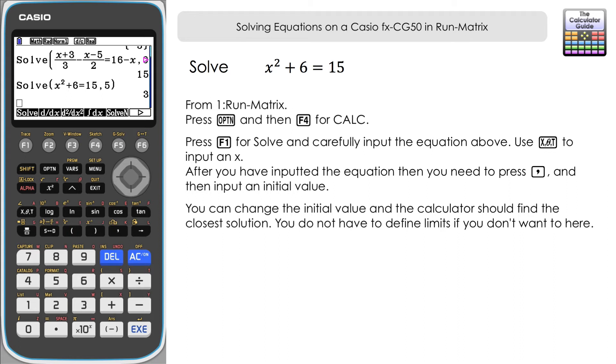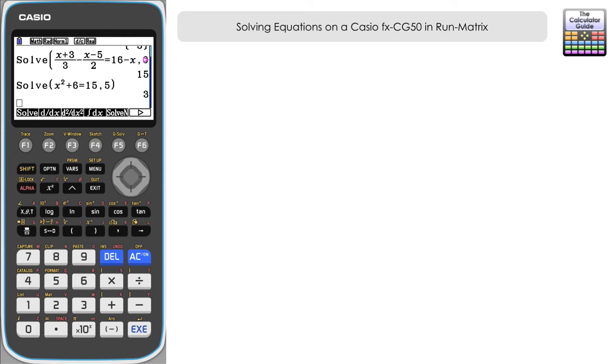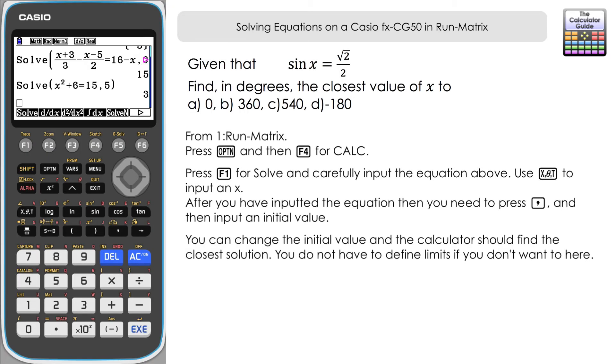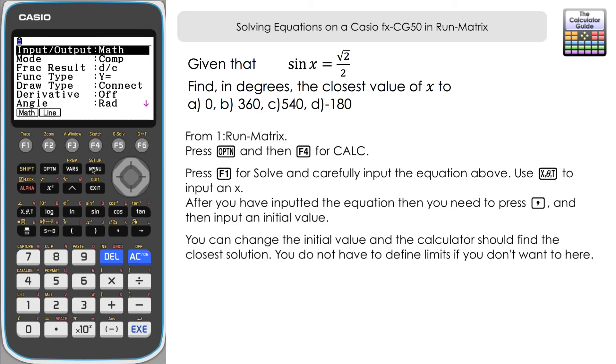Now this really is an advantage if we want to explore trigonometric functions where there might be different solutions depending on the domain of x or the values that x can take. In this example we're given that sin(x) = √2/2 and we've got to find in degrees the closest value of x to 0, 360, 540, and -180. And there is also going to be another one that I'm going to explore after that as well, again exploring what happens when we're equidistant between two solutions. So first job here is to change the angle of the calculator into degrees. We're currently in radians. So that is shift and then set up down to angle and F1 for degrees.